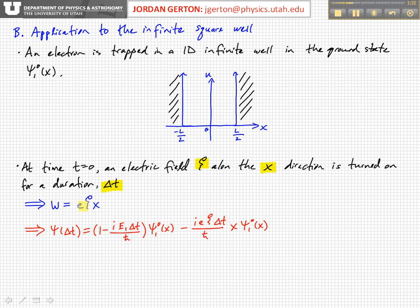And here we have a very similar form: little e, the elementary charge, times psi, the electric field magnitude, times the position X. So that's the perturbation that we're going to apply at T equals zero for duration delta T.